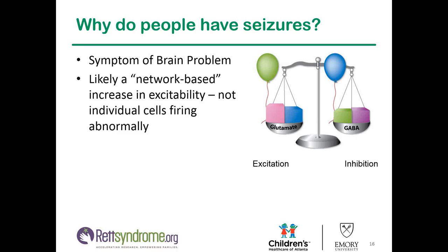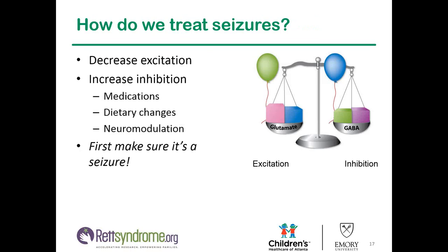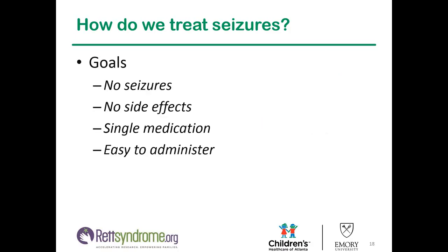How do we treat them? Simply stated, we decrease the excitation or we increase the inhibition — we do this with medications. We can also use dietary changes like the ketogenic diet, or neuromodulation, which describes what things like the vagus nerve stimulator do. But first, the most important thing is to make sure that it is a seizure. Our goals in treatment are ultimately no seizures, no side effects, and treatment with a single medication that's easy to administer.